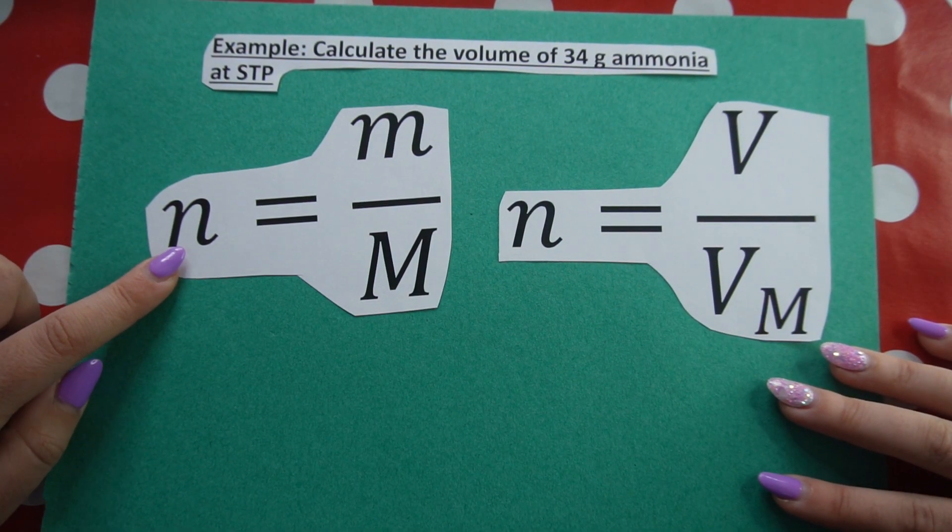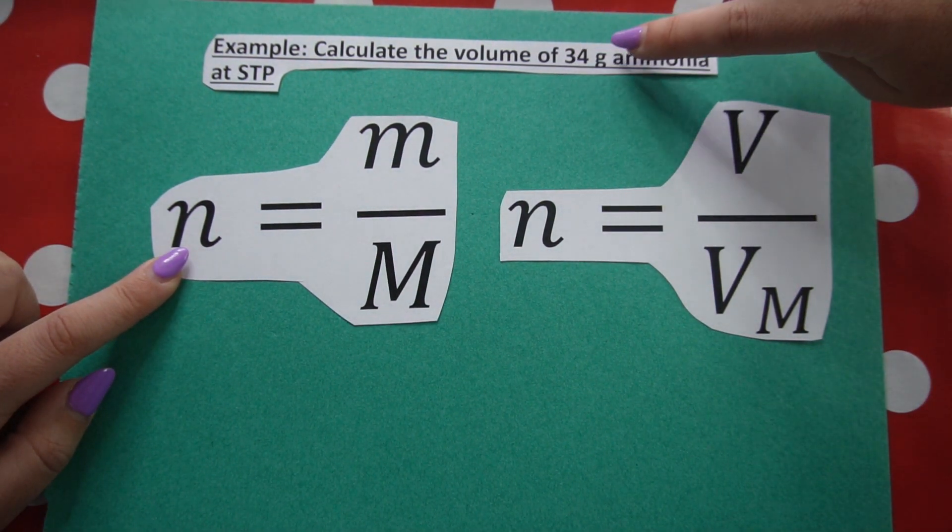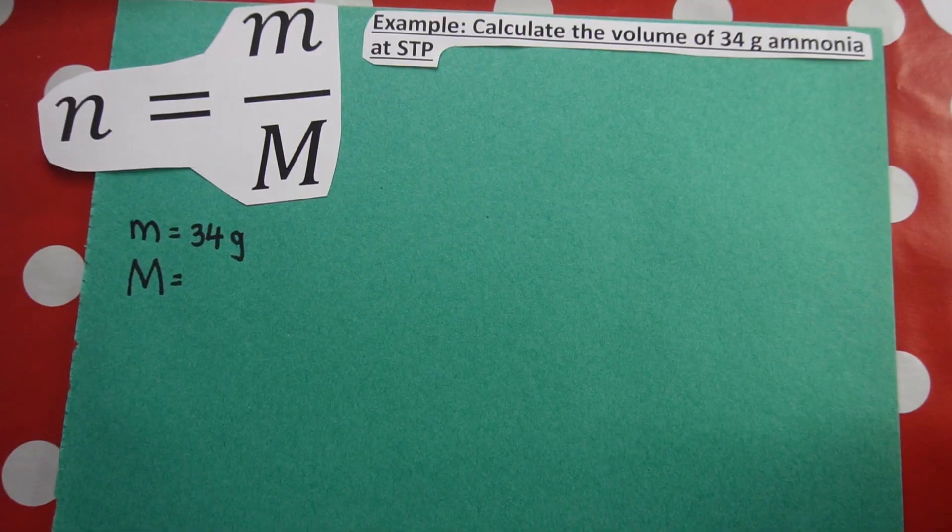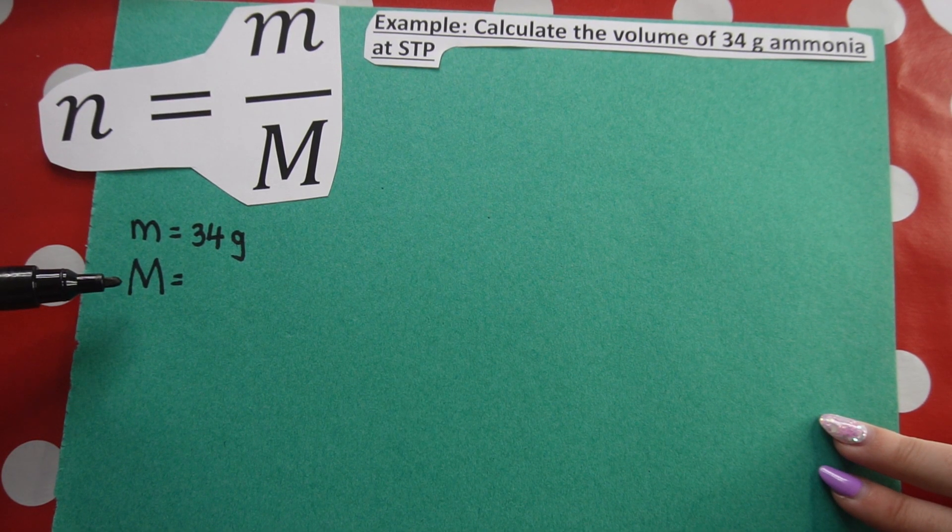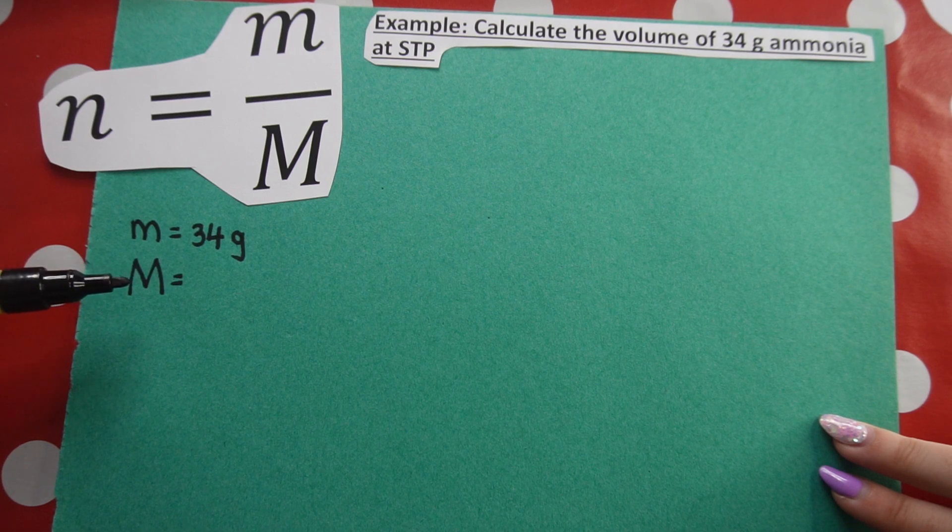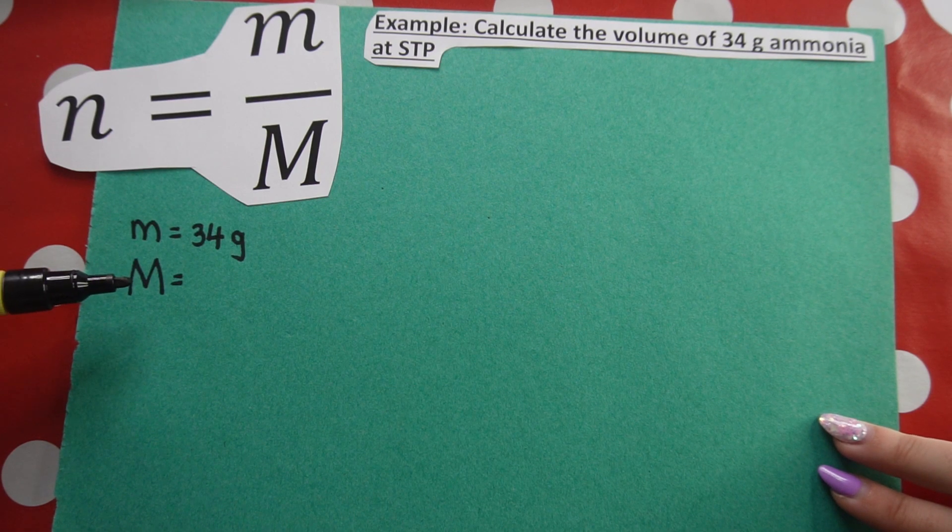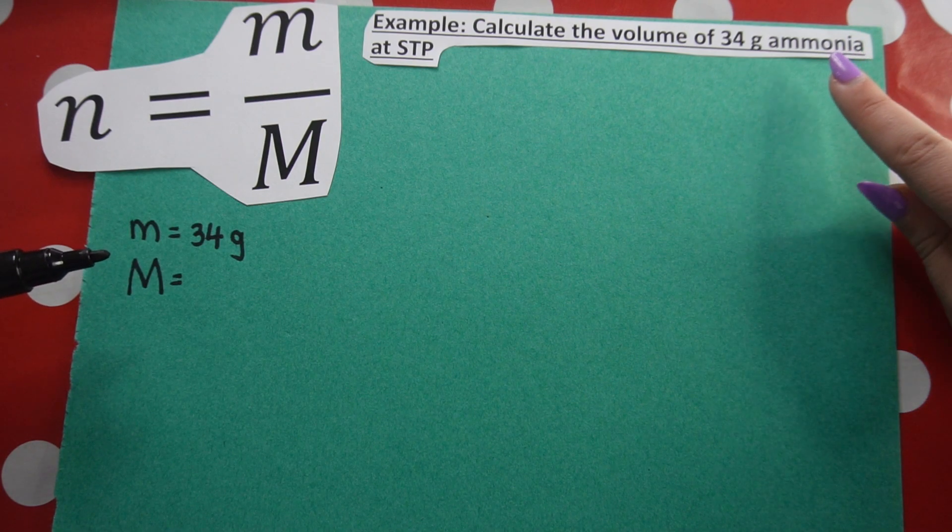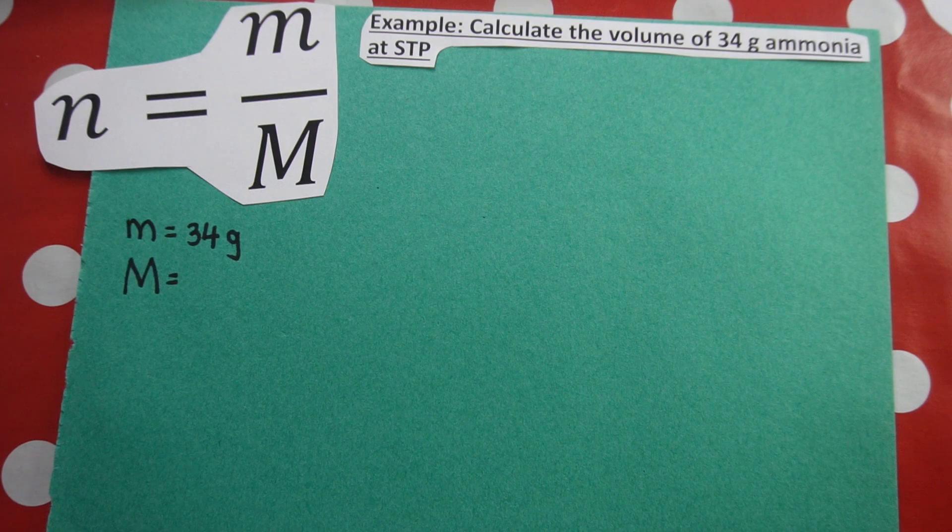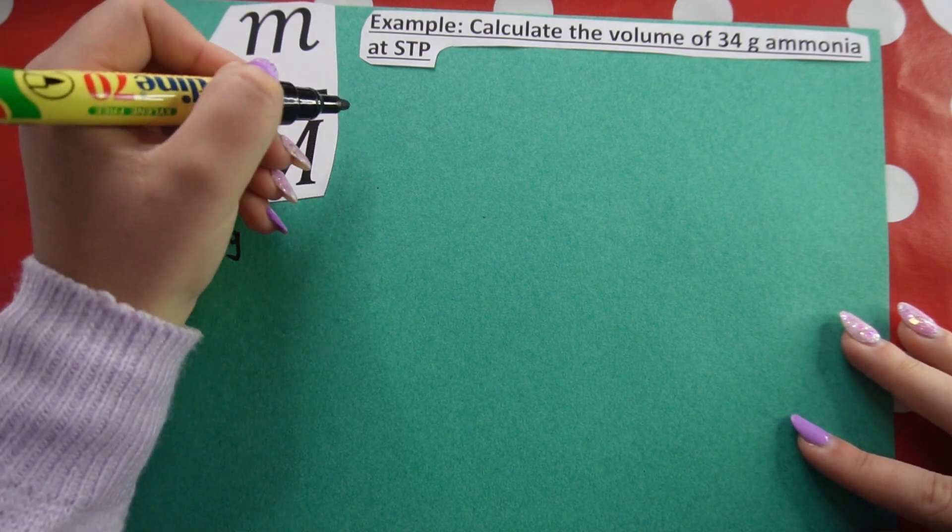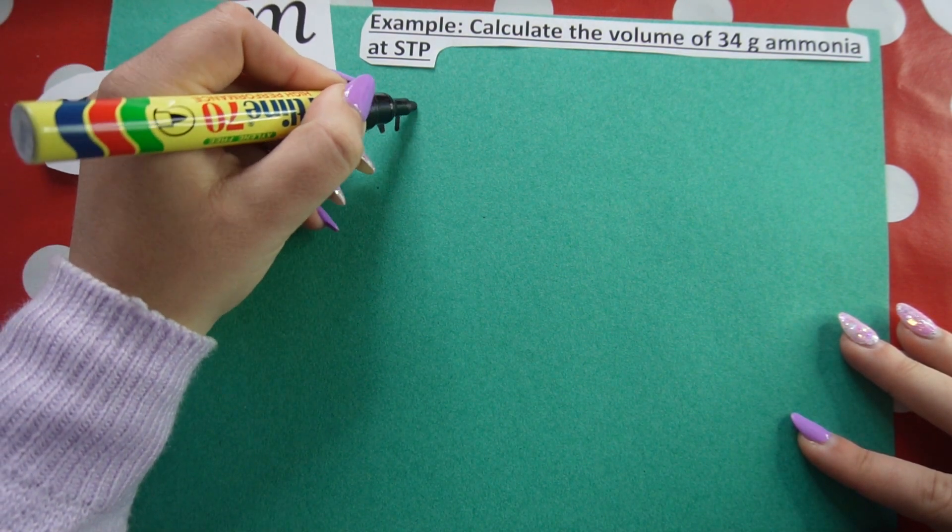I will be using this formula first as I'm given grams, which is mass, little m. So far, I know that little m, mass is 34 grams. Now I need to find molar mass and I use my periodic table to find molar mass. I need to add the atomic mass numbers of the individual atoms in ammonia. But what is ammonia? You need to know that ammonia is NH3.